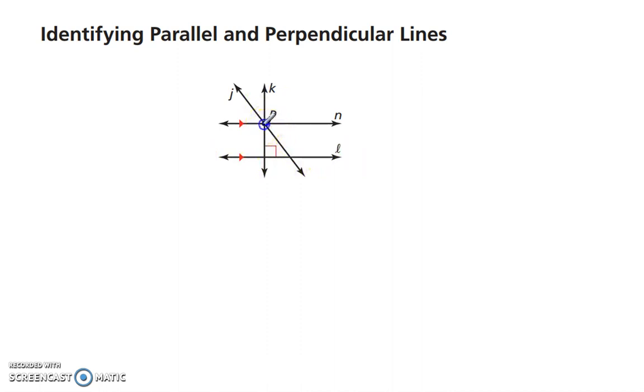Through point P, there is also only one line that is perpendicular to line L. So through line P, only line K is perpendicular to line L.